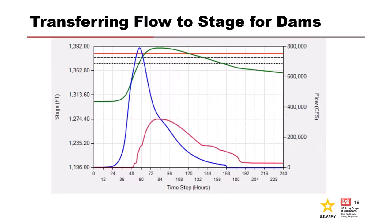Some items to note for reservoir routing: peak stage always occurs when the inflow crosses the outflow. If inflow is greater than outflow, your pool has to rise to conserve mass. But as soon as your outflow is greater than your inflow, your pool should start dropping. The slide here shows in green the pool elevation, blue the inflow hydrograph, and red the outflow — right when inflow and outflow cross, that's where we should see the pool crest.